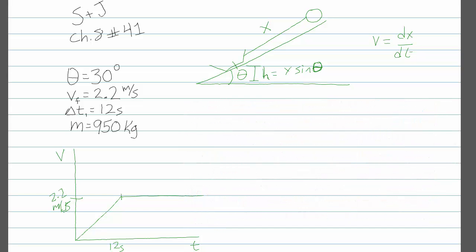Luckily, we know how to do that because we know that the power, really the definition of power, is the rate of change of energy. So dE dt, how many joules per second is the winch giving to the ore cart?